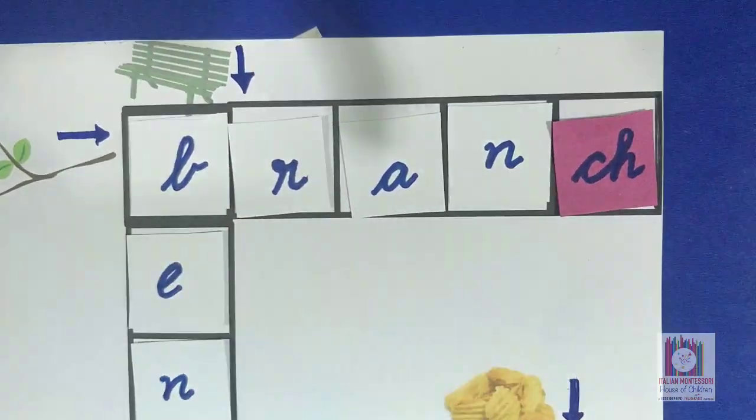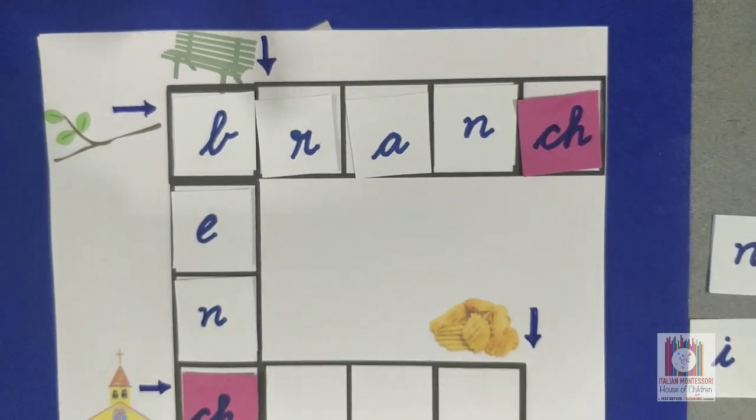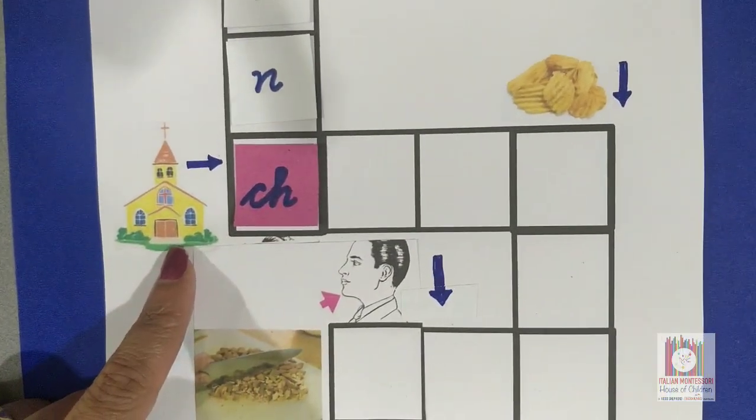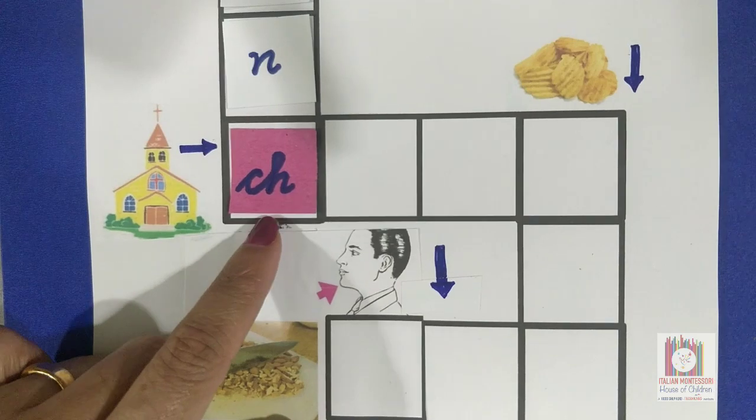Branch. Well done. Now can you tell me what picture is this? Church. Church. And the first sound is already placed here.